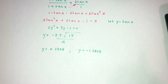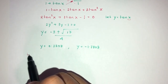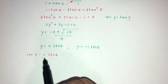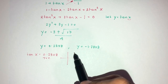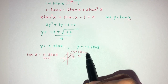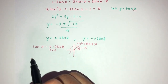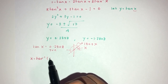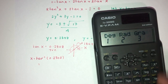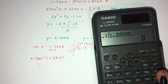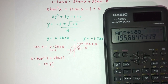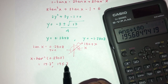Now find x from y equals tan x. For y equals 0.2808, this is positive, so using the ASTC quadrants it appears in the first and third quadrants. x equals tan inverse of 0.2808, which gives 15.7 degrees, or 180 plus 15.7 which is 195.7 degrees.